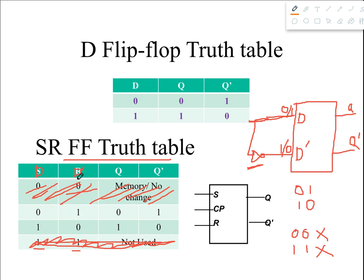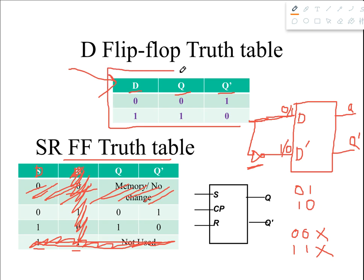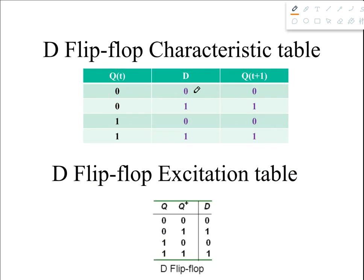The remaining part is the truth table for D flip-flop. Since D prime is just the complement of D, we can ignore the column for D prime. This becomes the actual truth table for D flip-flop — just D, Q, and Q prime — clearly derived from the SR flip-flop truth table. In the next part we'll derive the characteristic table and excitation table using this truth table.